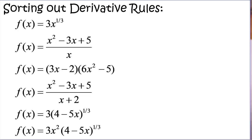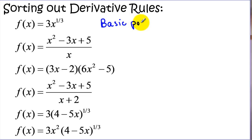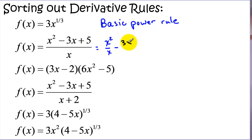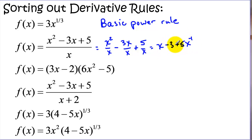Before we get started let's just review some of the basic functions that we've been seeing and how we decide which rule to use. If we start with this top function here we have a constant times x to a power, so that's just the basic power rule. We also learned about rewriting functions so that we could use the basic power rule and the sum and difference rule — dividing out and simplifying each of those fractions.